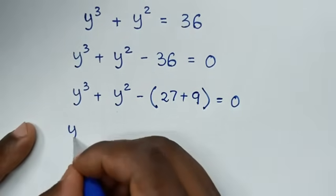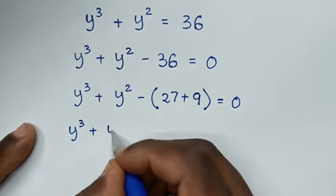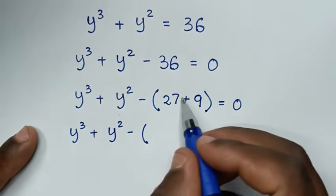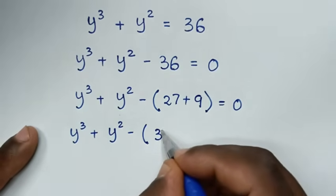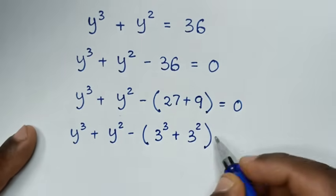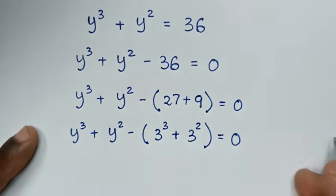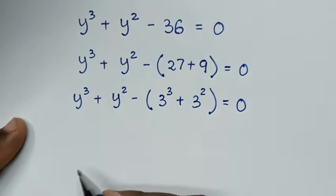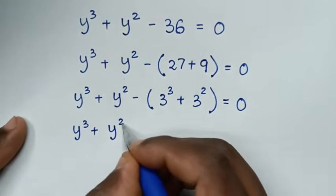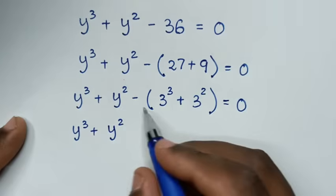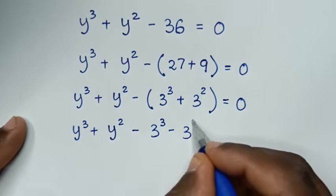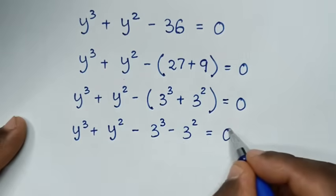In the next step, it will be y³ plus y² minus (27 plus 9) equals 0. We rewrite 27 as 3³ and 9 as 3², then take the negative inside the bracket, giving y³ plus y² minus 3³ minus 3² equals 0.